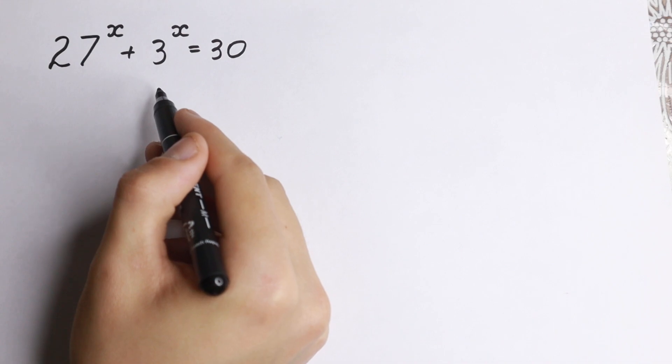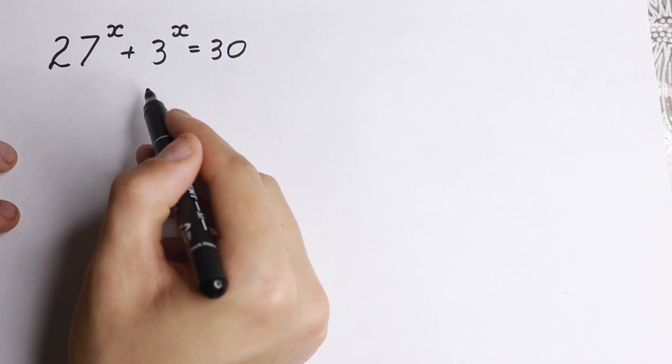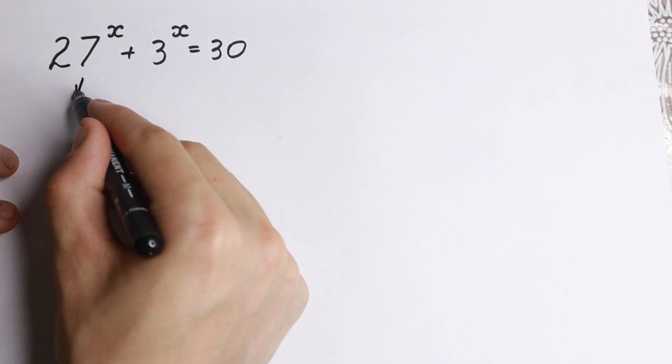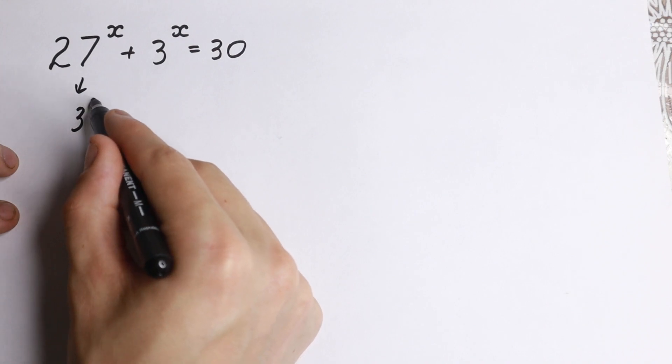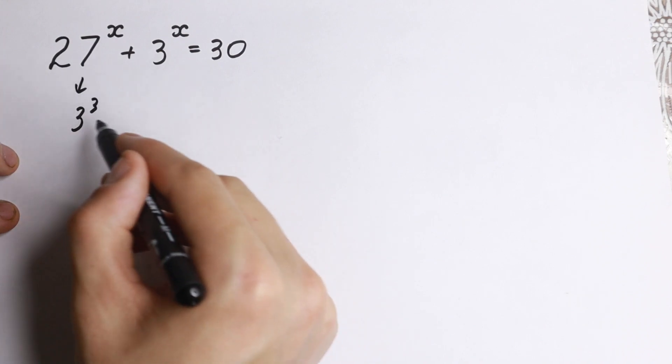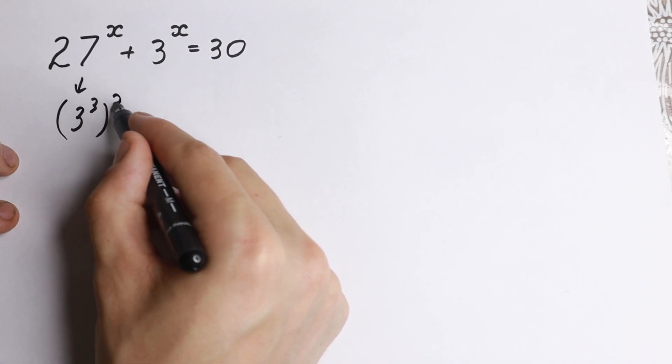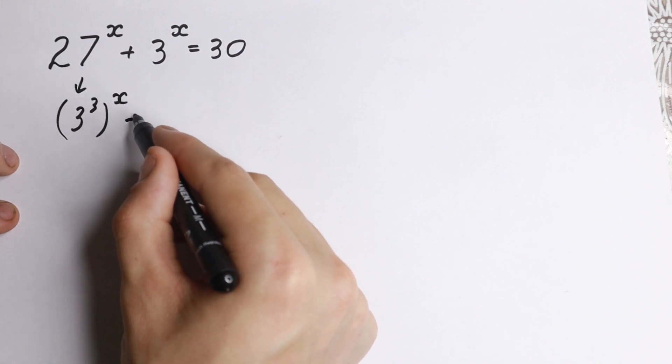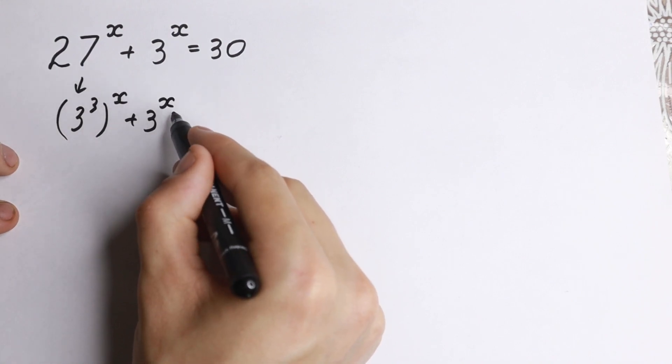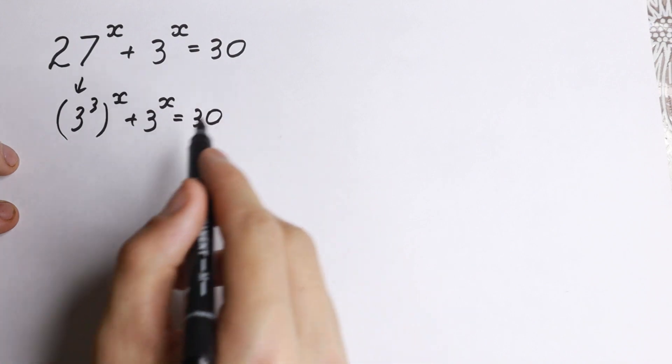Of course we need to solve it. First way is to use logarithm, but I want to show you a really good approach because 27 is good to write as 3 cubed. We all know this. 3 times 3 times 3 equal to 27. So 3 cubed to the power x plus 3 to the x equal to 30.